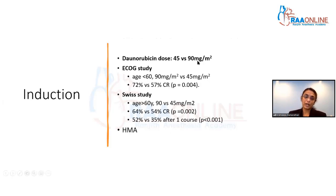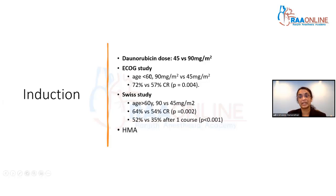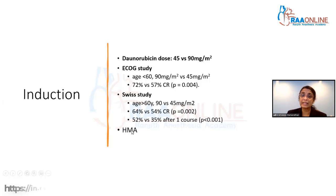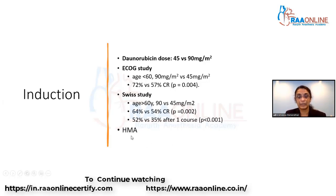What are the treatment options for AML? For AML induction, you have daunorubicin at 45 versus 90 milligram per meter squared. Two doses were studied, and 90 mg/m² had a higher CR rate. If a patient can tolerate it — meaning age less than 60 — you can use the higher dose. In the Swiss study, they looked at age greater than 60 with the higher dose and also found a better CR rate even in the elderly. Another option, which is not induction chemotherapy, is hypomethylating agents.